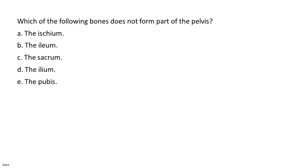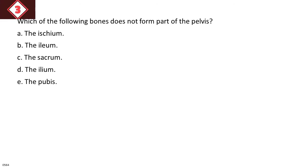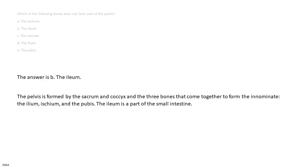Which of the following bones does not form part of the pelvis? A. The ischium. B. The ileum. C. The sacrum. D. The ilium. E. The pubis. The answer is B, the ileum. The pelvis is formed by the sacrum and coccyx and the three bones that come together to form the innominate: the ilium, ischium, and the pubis. The ileum is a part of the small intestine.